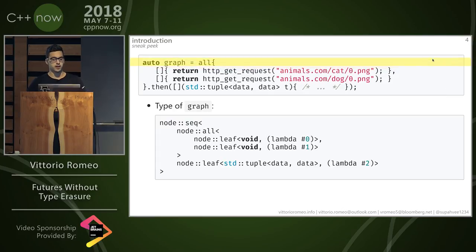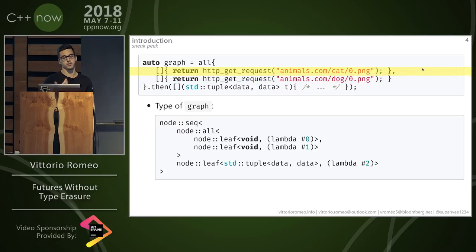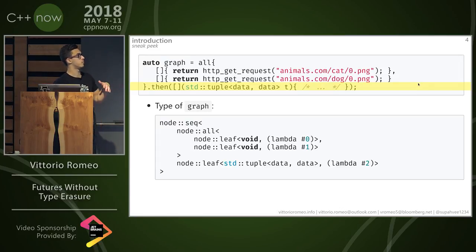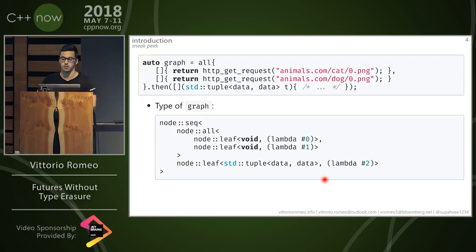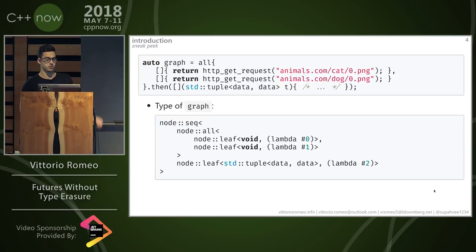Another example: we can have something more complicated. We can have an 'all' node that accepts any number of lambdas — for example, HTTP GET requests — and then attach a continuation that takes a tuple with data from the first and second computation, invoked automatically when both are complete. The graph type in the type system captures the fact that we have a sequential node of a 'node_all', containing two leaves, with a continuation leaf taking a tuple of data and storing a lambda for its behavior. The goal is capturing everything into the type system and building up the graph as part of a node namespace with various types.